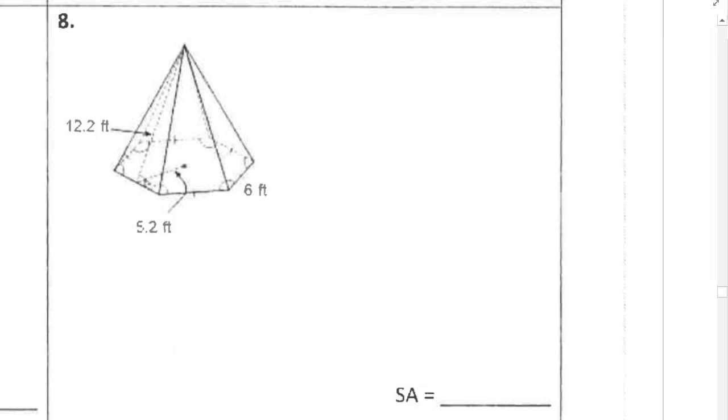So we've got a hexagonal pyramid. The area formulas that I'm going to need are for the base. So the area of a regular polygon, that's a times n times s, divided by 2.